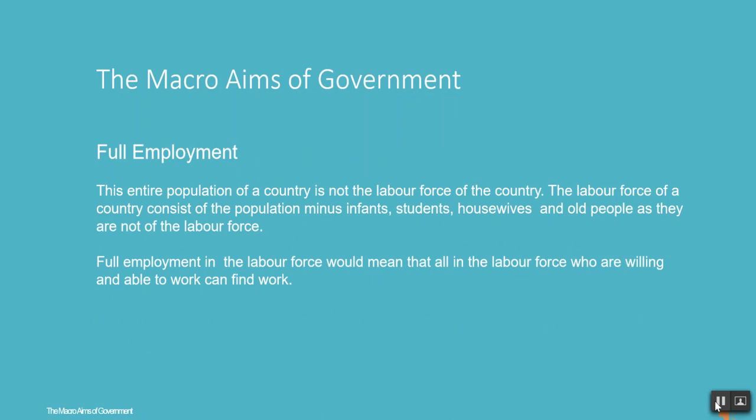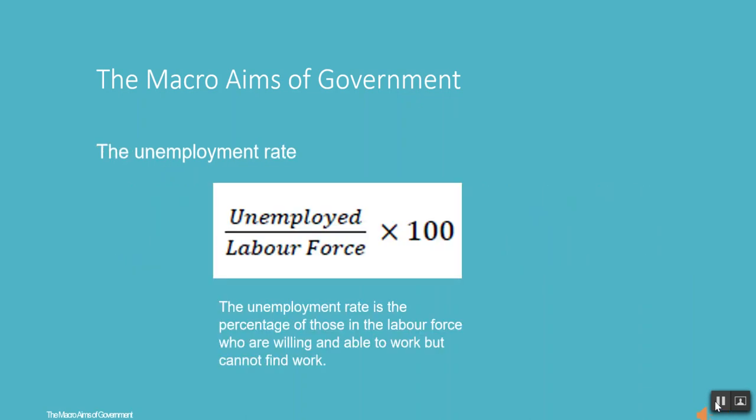Full employment means the entire population of a country is not the labour force. The labour force consists of the population minus infants, students, housewives, and old people, as they are not part of the labour force. Full employment in the labour force means that all in the labour force who are willing and able to work can find work. The unemployment rate is the percentage of those in the labour force who are willing and able to work but cannot find work.